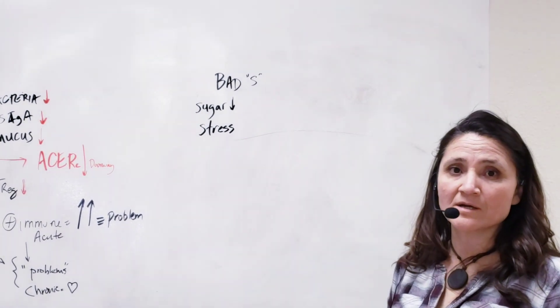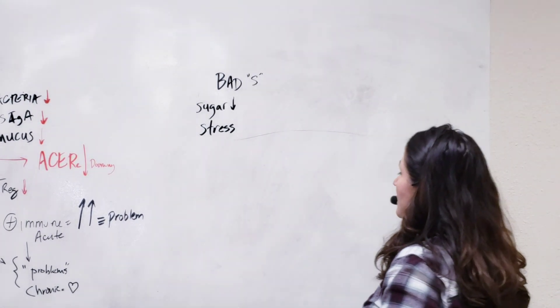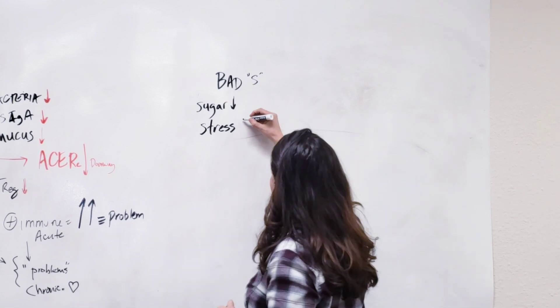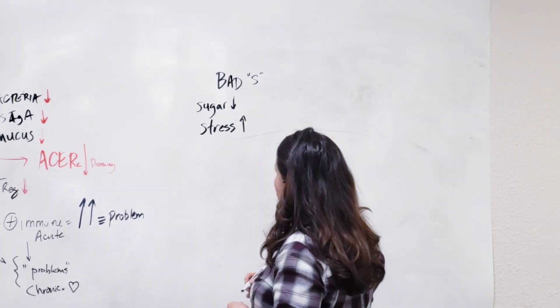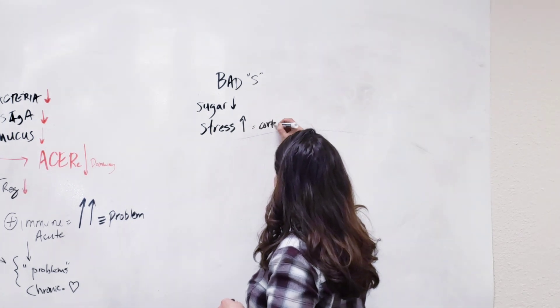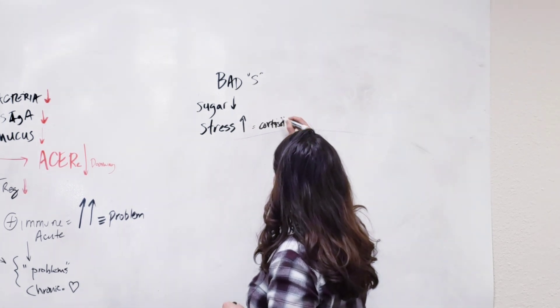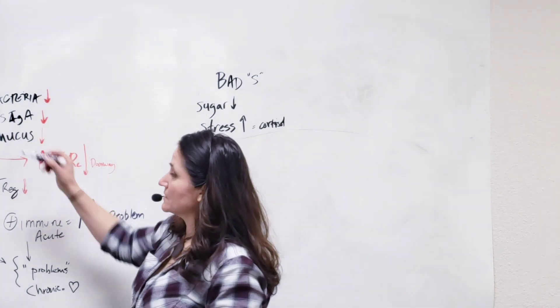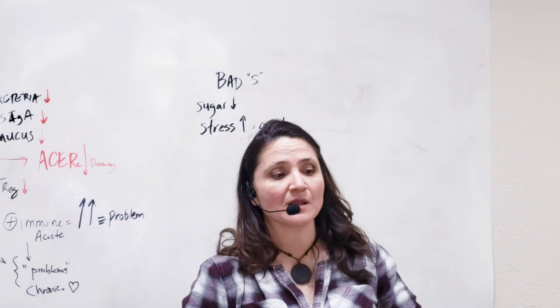You can imagine there's a lot more stress than 77%. And so the problem with stress is stress increases cortisol, which is a stress hormone. And that cortisol will actually damage the mucosa layer and the gut lining.